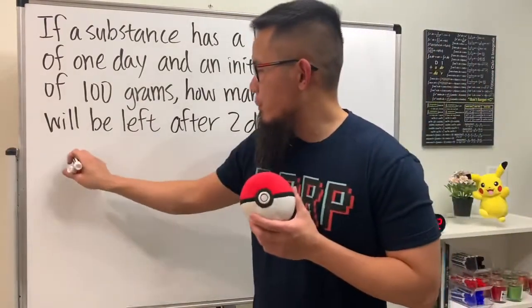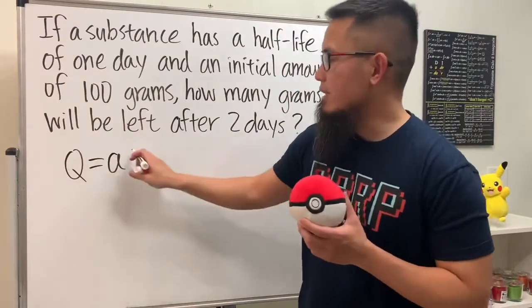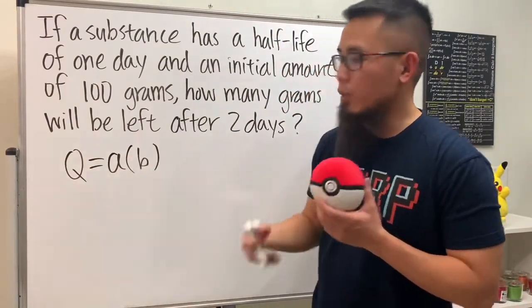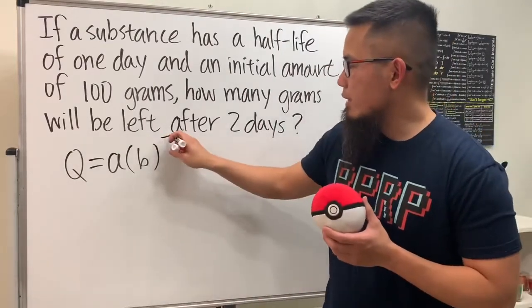We'll use Q for quantity, a for the initial amount, and b for the growth factor or decay factor in this case, raised to the little t power divided by capital T.